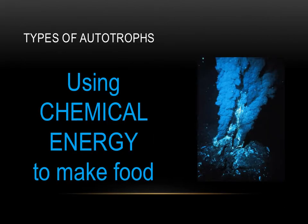Not all autotrophs live where there's light. Some live at the bottom of the ocean, for example, yet they still need food. Instead of harnessing light energy, these autotrophs harness chemical energy from inorganic molecules spewing out of hydrothermal vents, and this process is known as chemosynthesis. They still make glucose — they just do it using chemical energy instead of light. Certain deep-sea bacteria are chemosynthetic autotrophs, and chemical energy drives their food production.